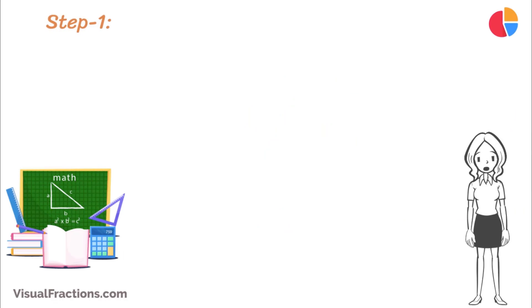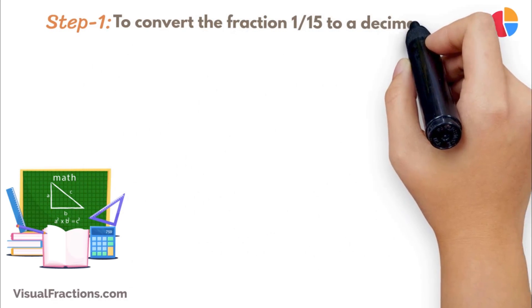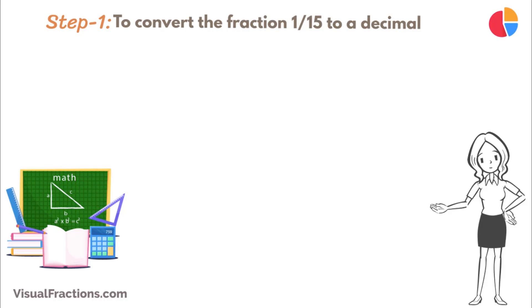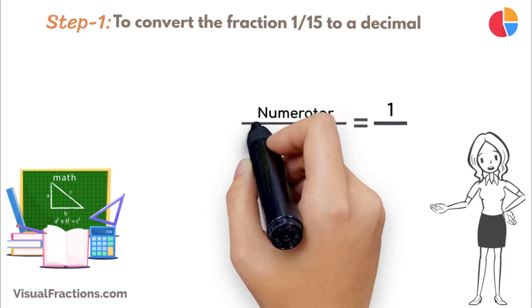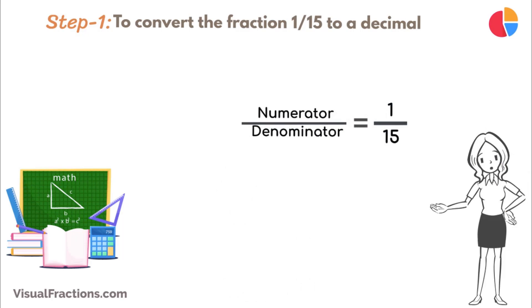The first step in converting the fraction 1/15 to a percent is to convert this fraction to a decimal. We do this by dividing the numerator, the top number, which is 1, by the denominator, the bottom number, which is 15.